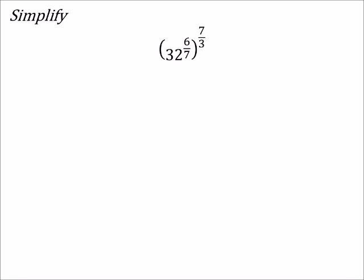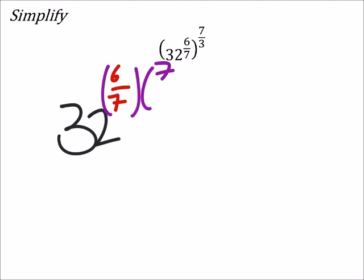So again, this all really comes down to fraction operations, because I've got a base of 32, but in this case, we've got that 6 7ths, and then we're going to multiply that by 7 3rds.